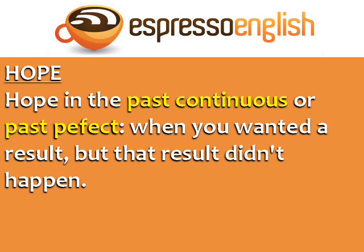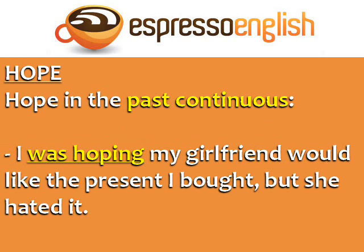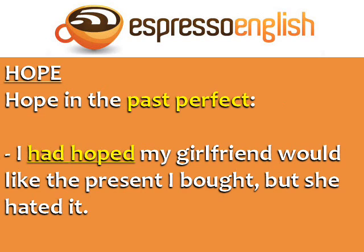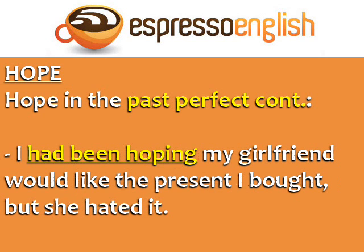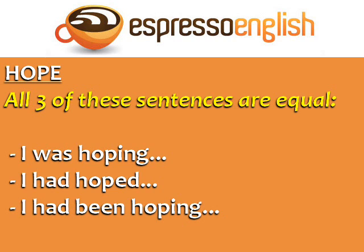You can also use the word hope in the past continuous or past perfect, when you wanted a result but that result didn't happen. For example, I was hoping my girlfriend would like the present I bought, but she hated it. You can also say I had hoped my girlfriend would like the present I bought, but she hated it. You can also use the past perfect continuous: I had been hoping. All three of these sentences are equal.